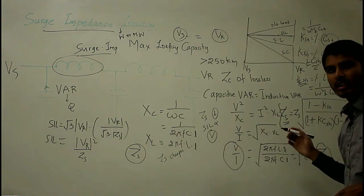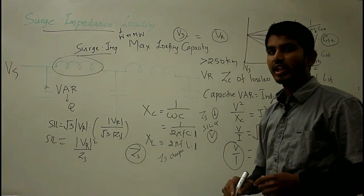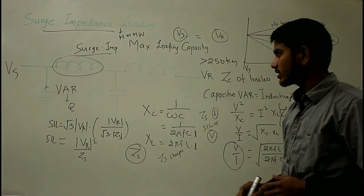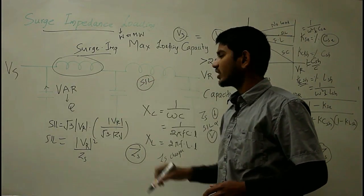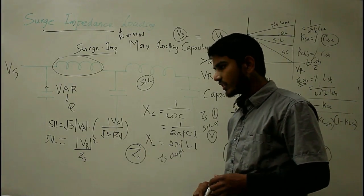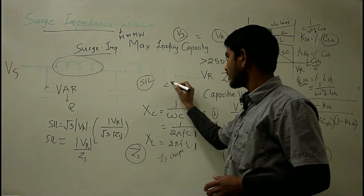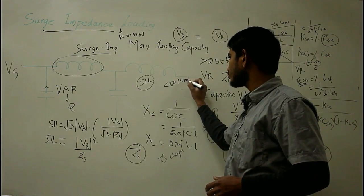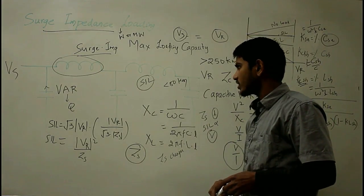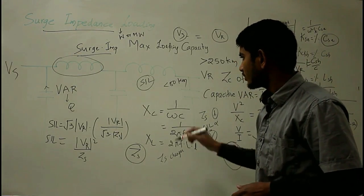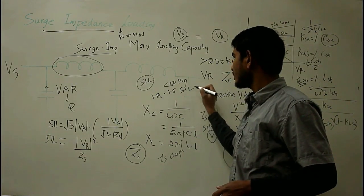Turning to the applications of surge impedance loading: power engineers normally represent line loading in terms of SIL. The maximum load that a short transmission line (less than 80 km) can transfer is about 1.2 to 1.5 times the SIL without any compensation.